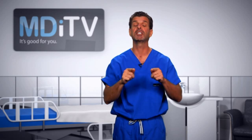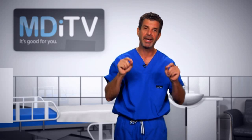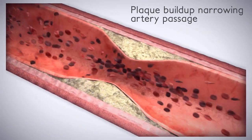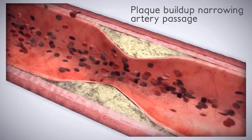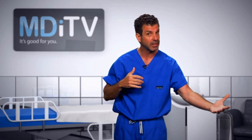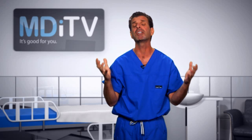Angina refers specifically to chest pain caused by a blockage in one of the arteries that feeds the heart. You get a narrowing. Blood has trouble getting through that narrowing. Blood carries oxygen. Your heart muscle can't get the oxygen downstream of the narrowing, and it says please give me oxygen, and if you don't give me oxygen, I'm going to give you chest pain or angina.